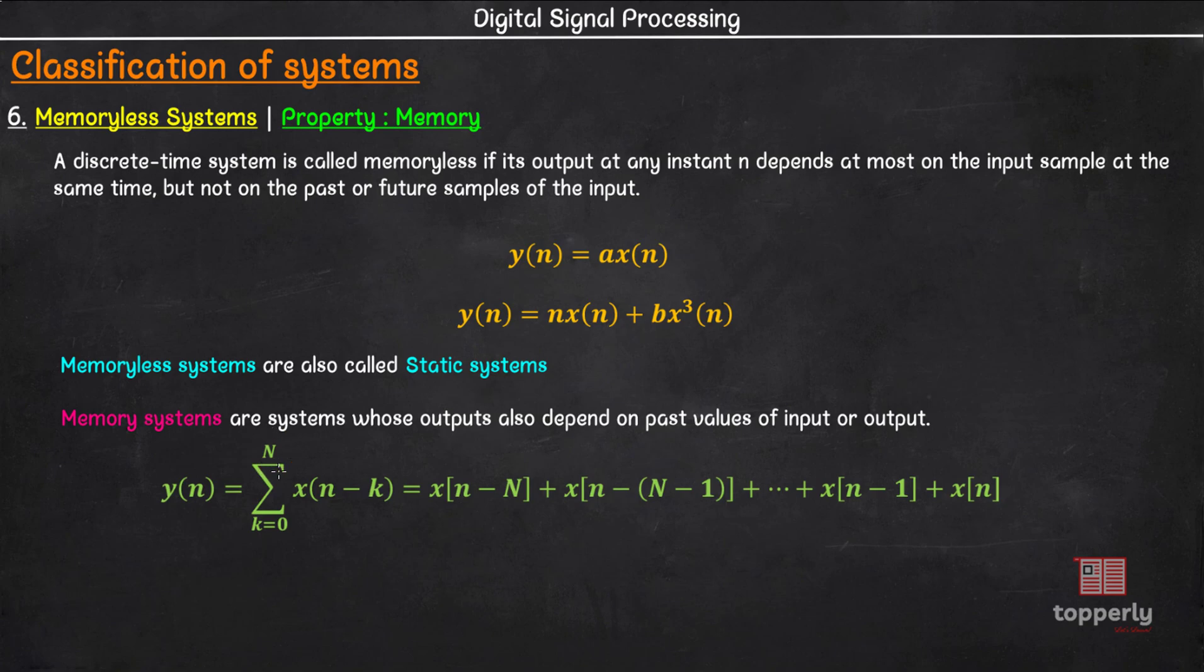If capital N lies in the range of 0 < N < infinity, then the system is said to have a finite memory. However, if capital N extends all the way to infinity, then the system is said to have infinite memory. Now, another term for memory system is dynamic system.